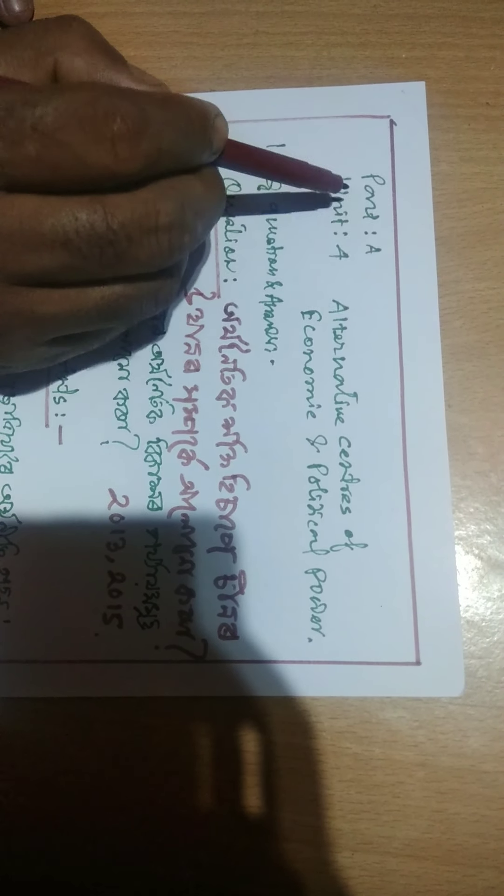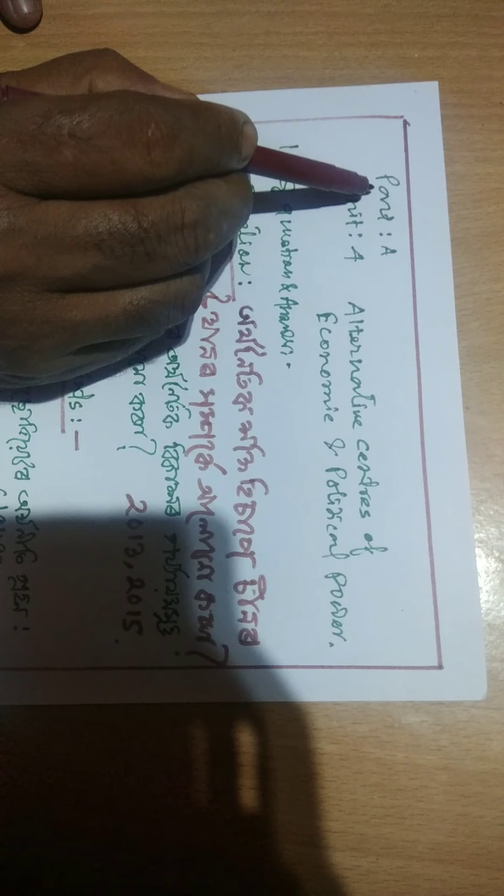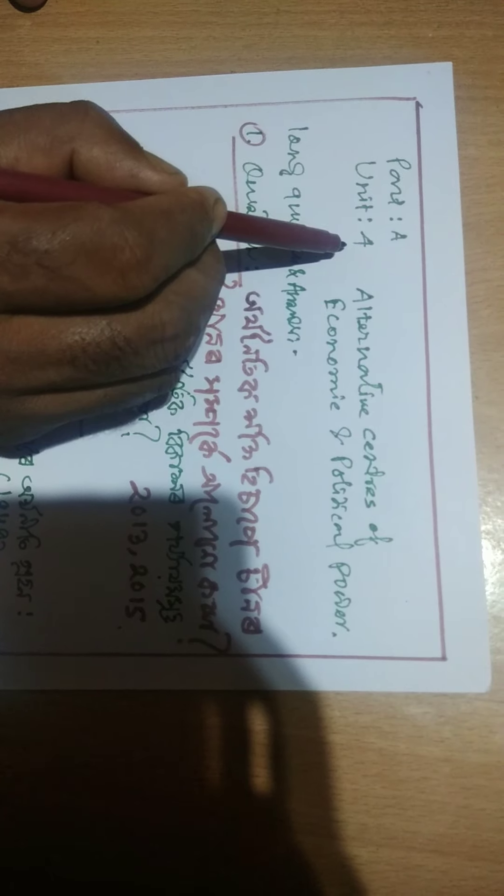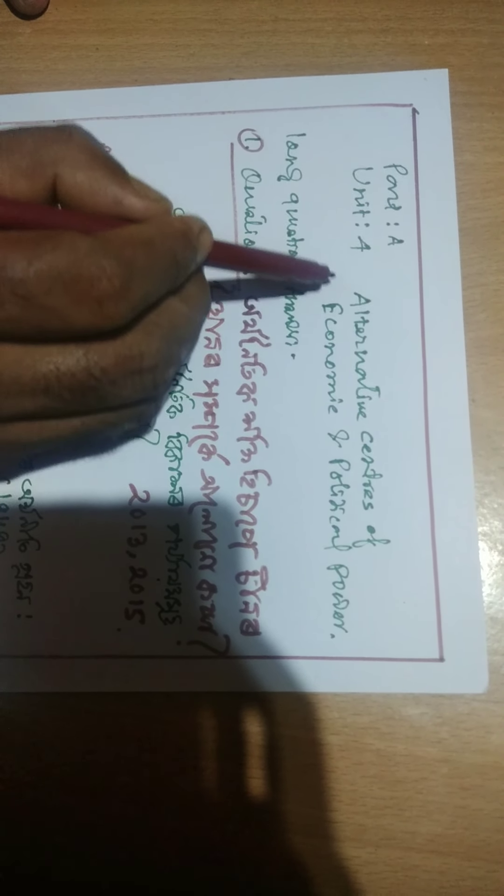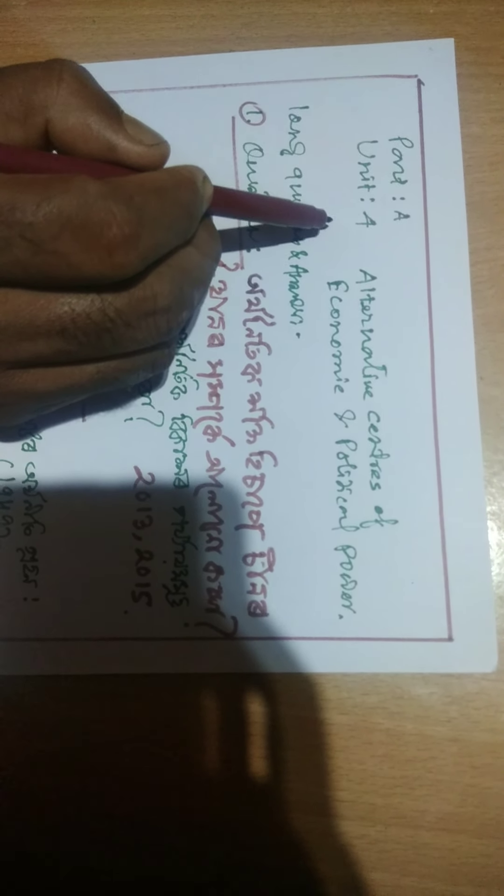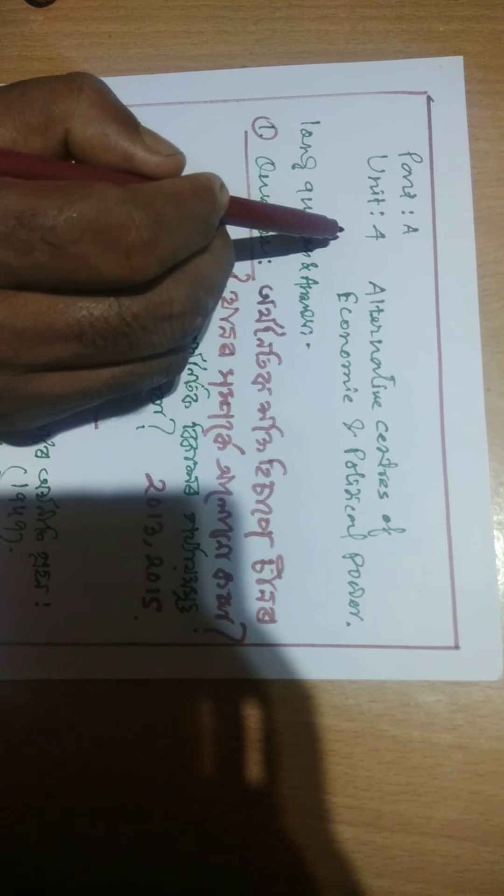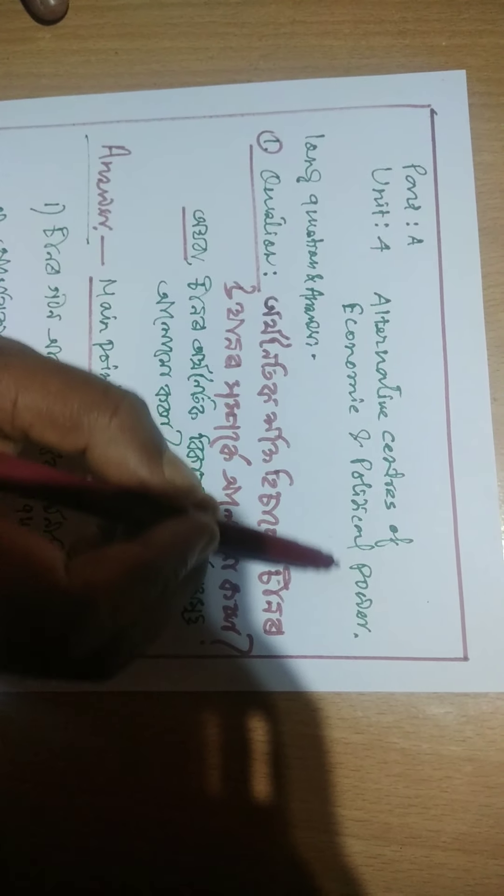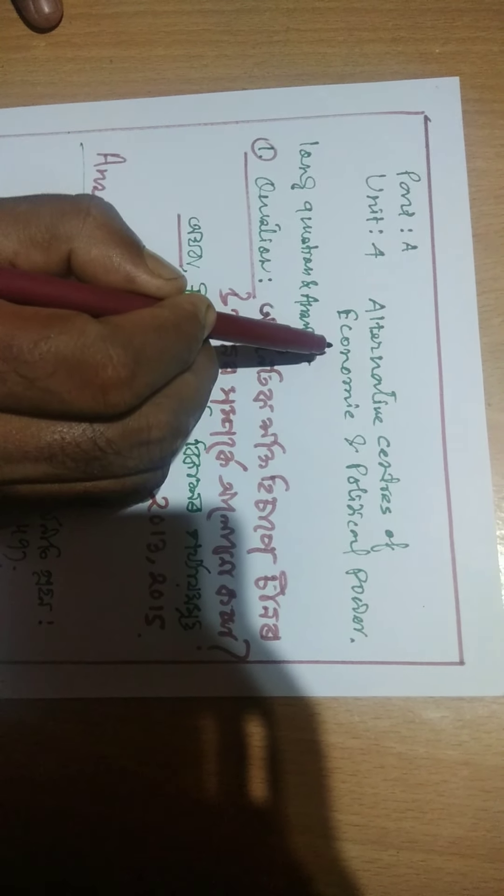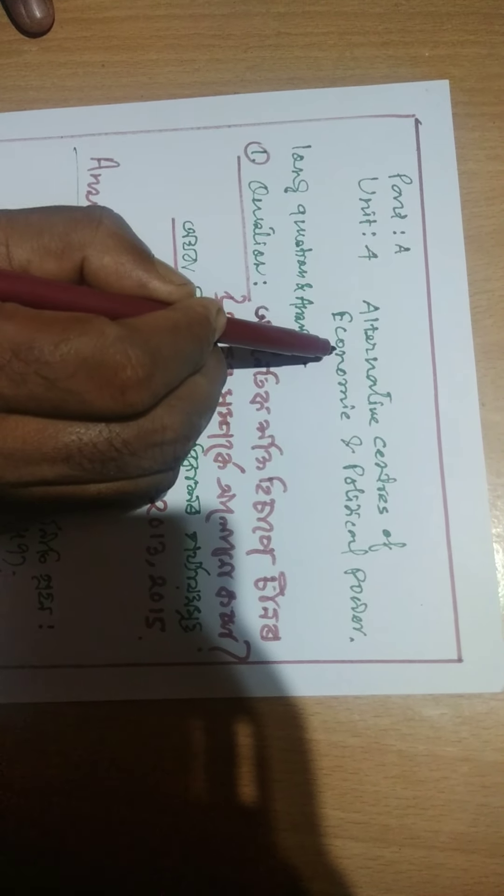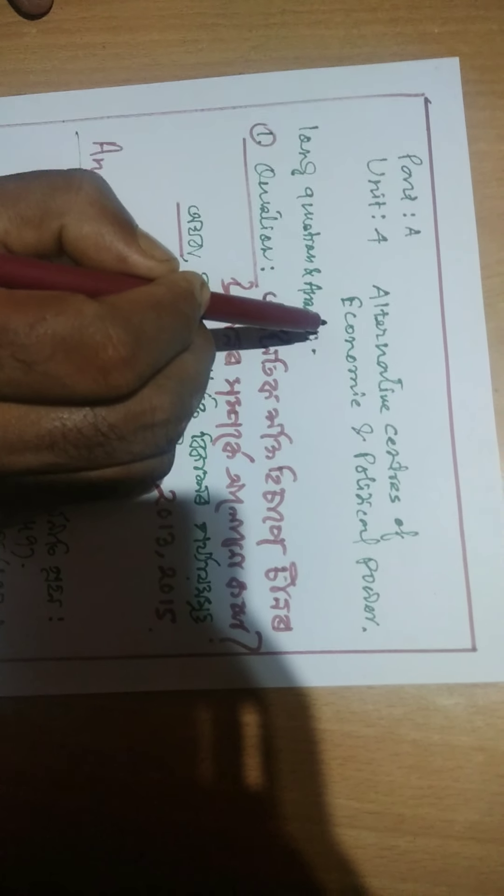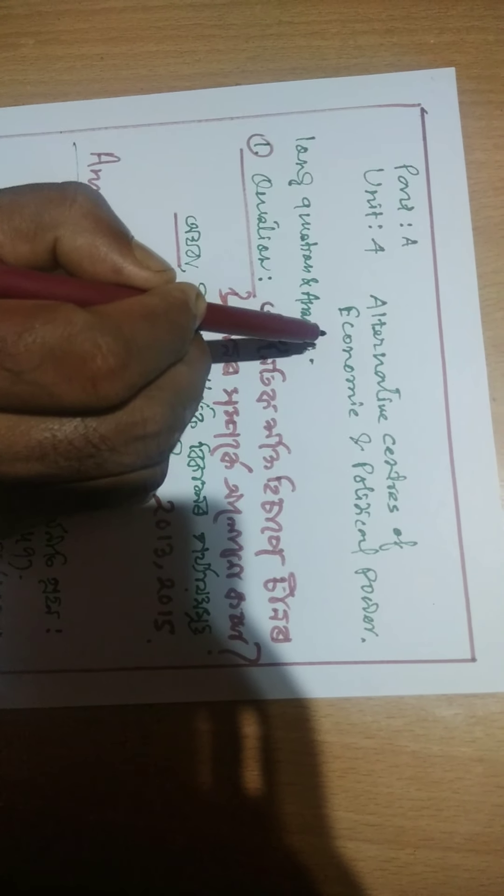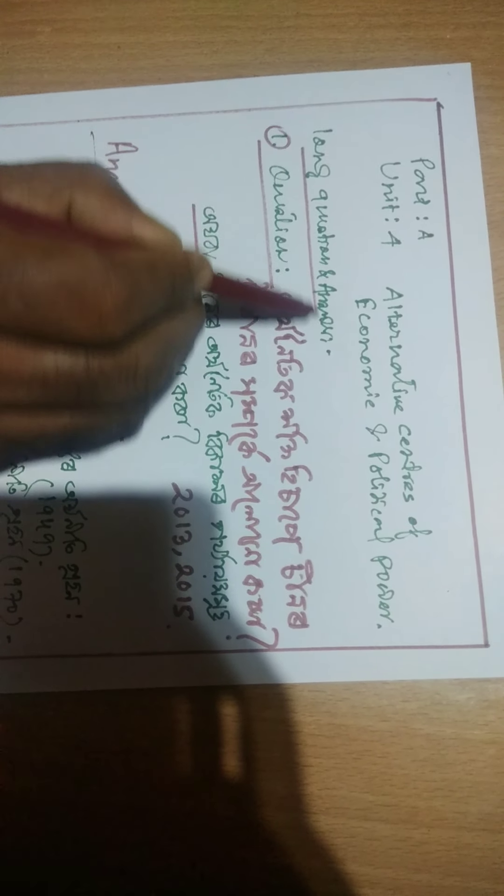Dear students, I am going to talk about this Part A, Unit 4. This is the alternative center of economic and political power. We will continue to do this and build for the future, discussing how we try to improve our policy and develop. We will continue to learn about this. Now we will have to ask this question.